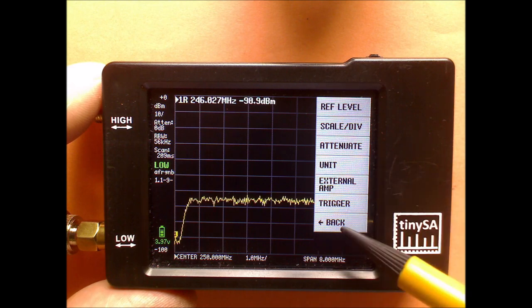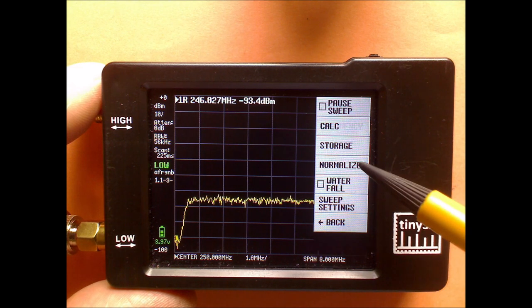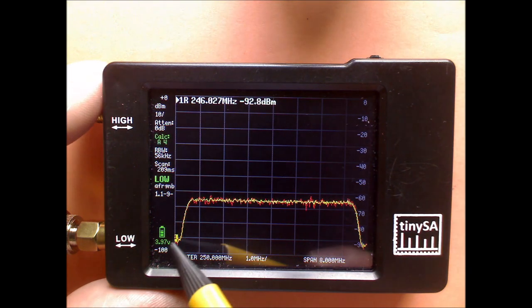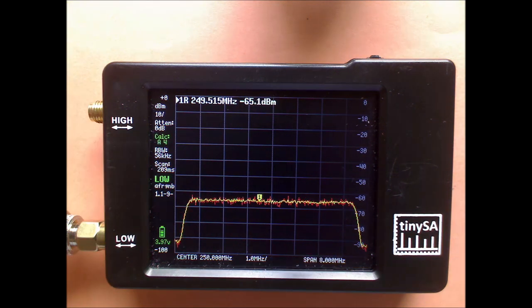We go to display, calculate, average 4. And we put the marker in the middle. And we measure the signal in the middle.